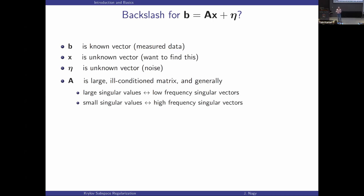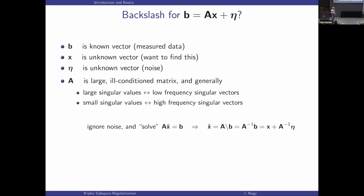Typically with these problems, the large singular values correspond to singular vectors that have low oscillation. As you get to the tiny singular values, the singular vectors oscillate a lot. I can't prove that for every single inverse problem, but it's generally true.